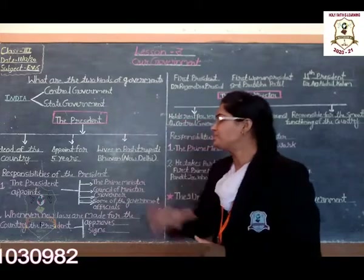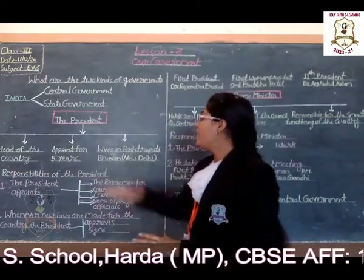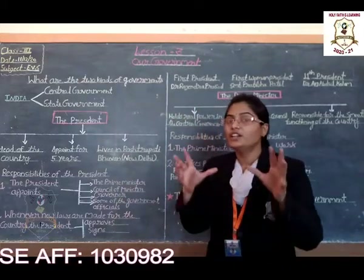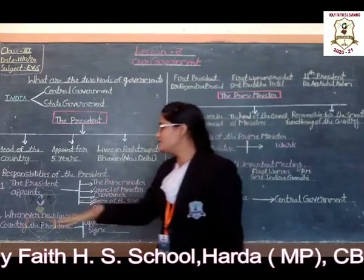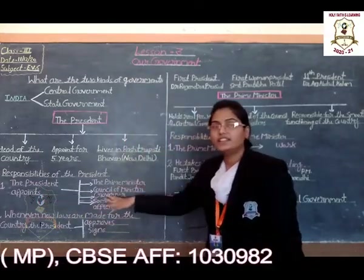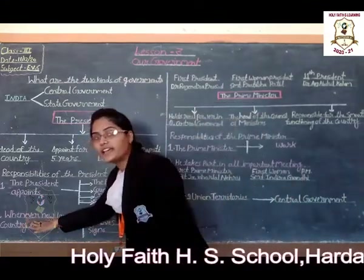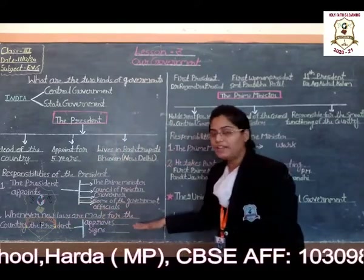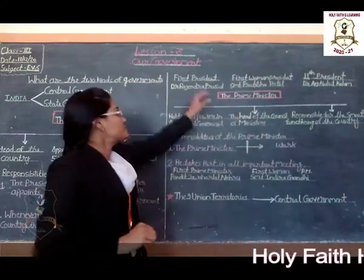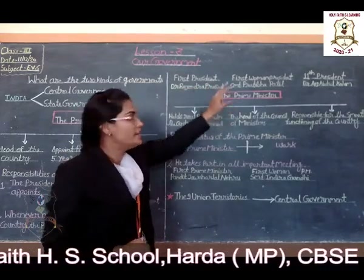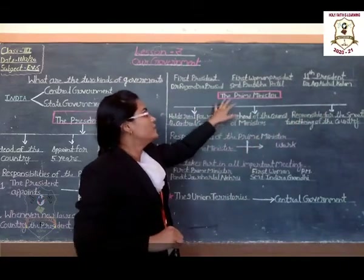Let us revise once again. Who is the president? The president is the head of the country, appointed for 5 years. The president lives in Rashtrapati Bhavan in New Delhi and is also called Rashtrapati. The responsibility of the president includes appointing the prime minister, council of ministers, governor, and some government officials.